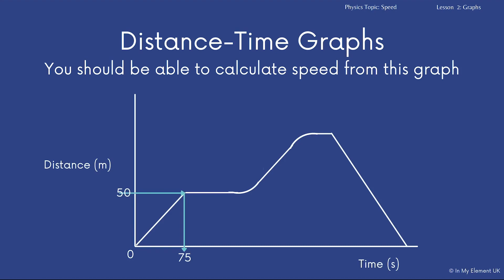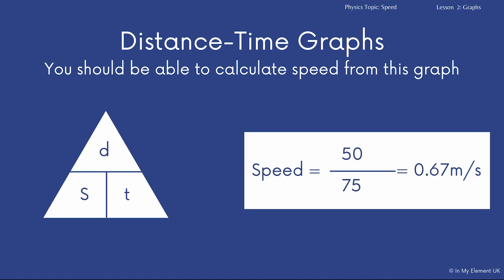Okay, because you had a distance of 50 and a time of 75 seconds. So you end up with that equation. Notice there you've got your units as well, your metres per second.